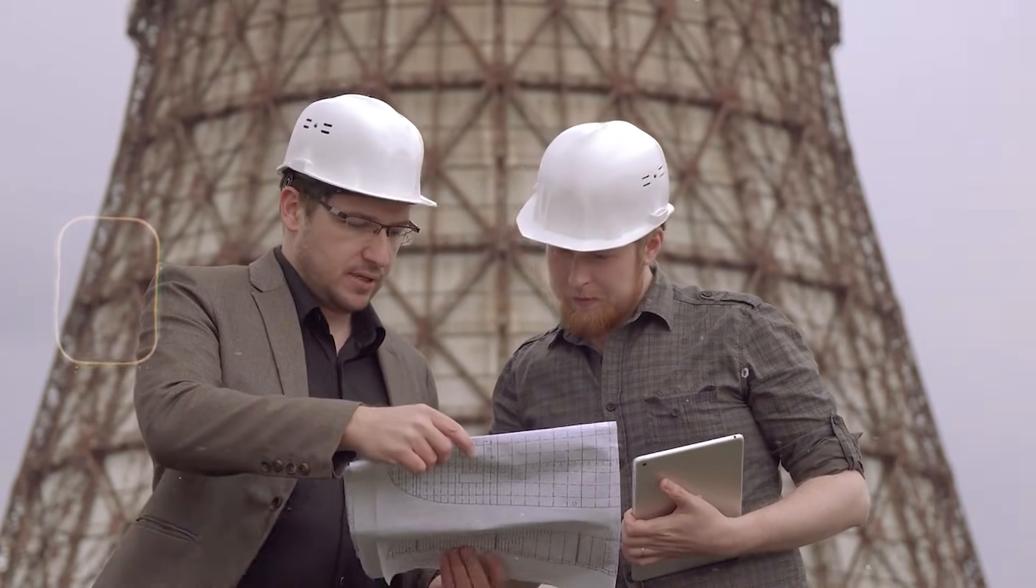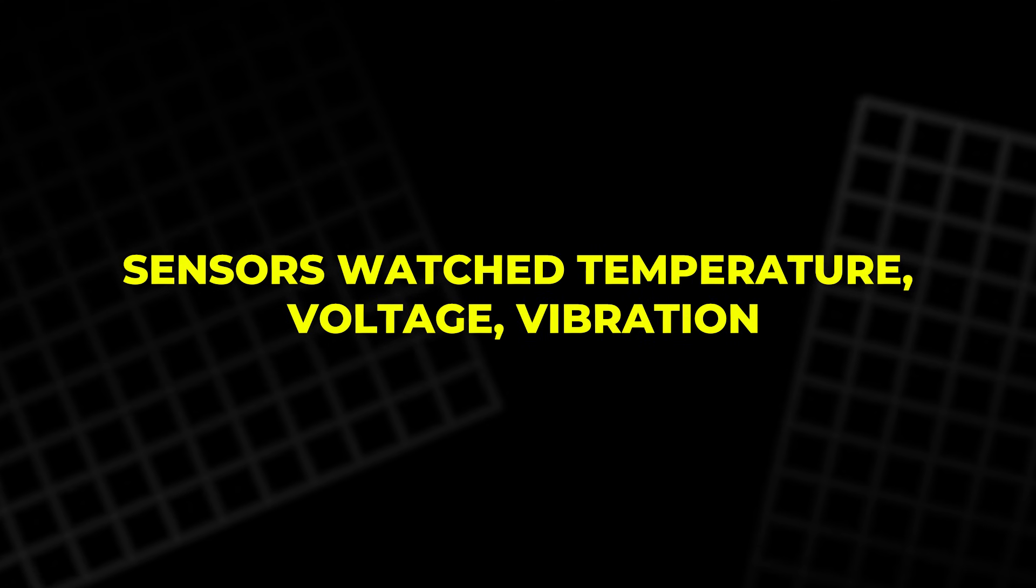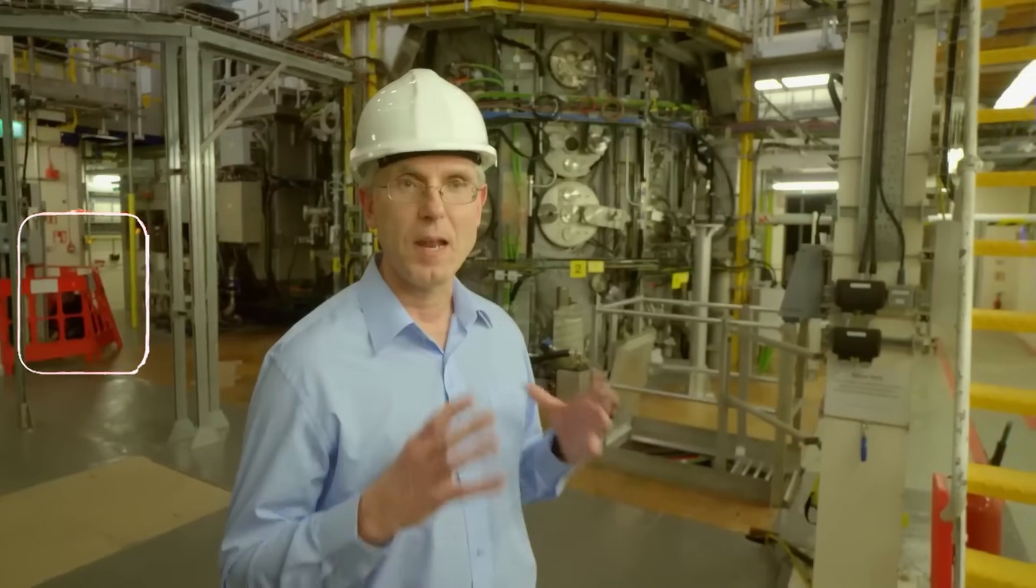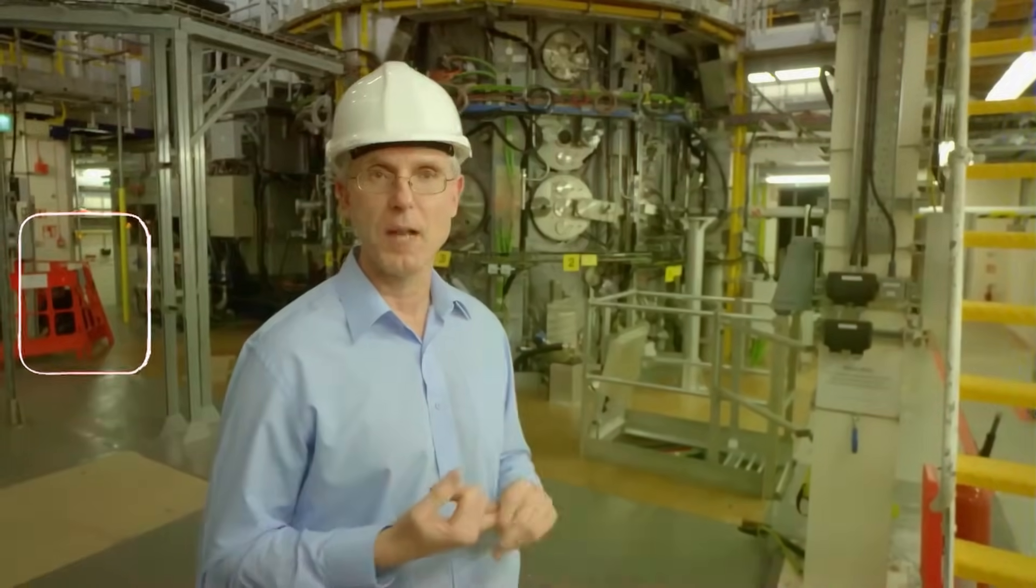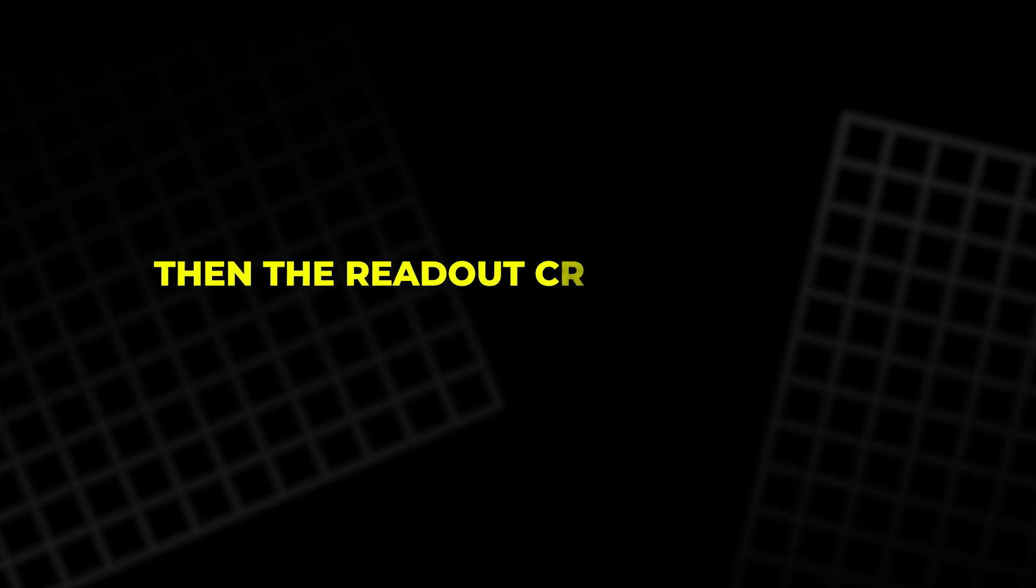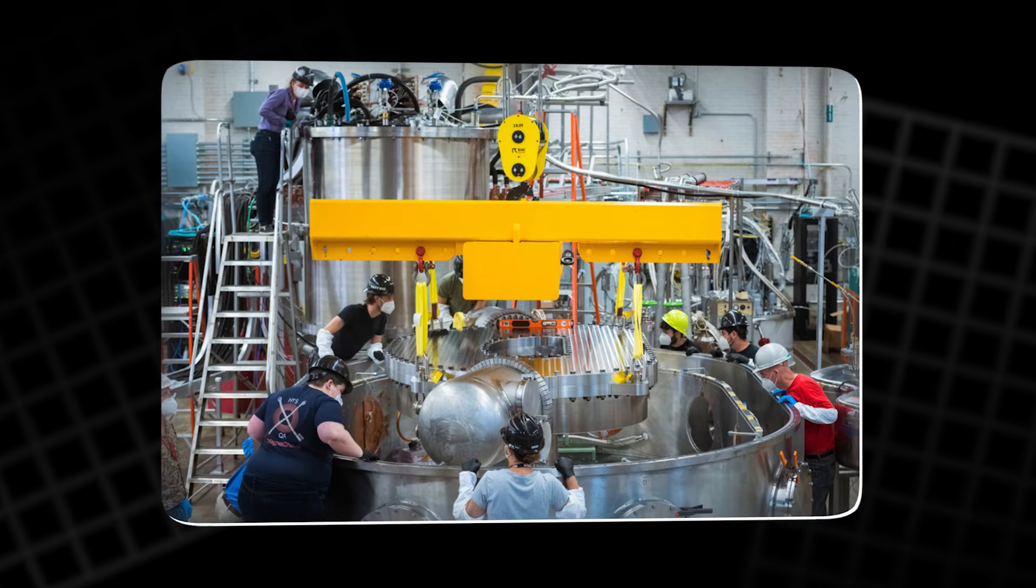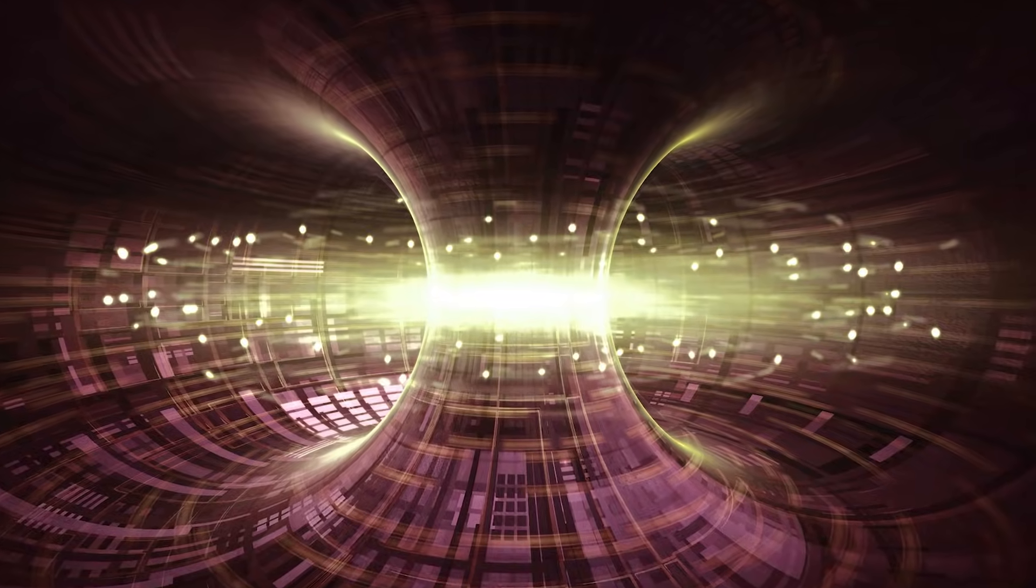On test day, engineers raised the current step by step. Sensors watched temperature, voltage, vibration, and anything that hinted at instability. If the coil quenched, it would stop being superconducting, heat up fast, and risk damage. Then the readout crossed the line: 20 Tesla. It was a record for a fusion-relevant high-temperature superconducting magnet, and it held the field without quenching.